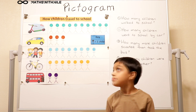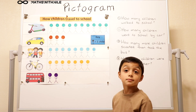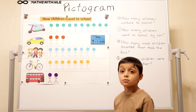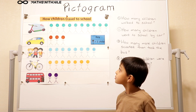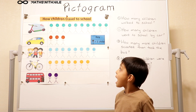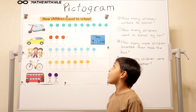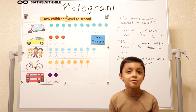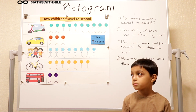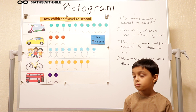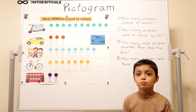The first thing I want us to look at is that pictogram on the board. Can you tell us what the title says? How children travel to school. So that means that chart is giving us some information about how children travel to school.